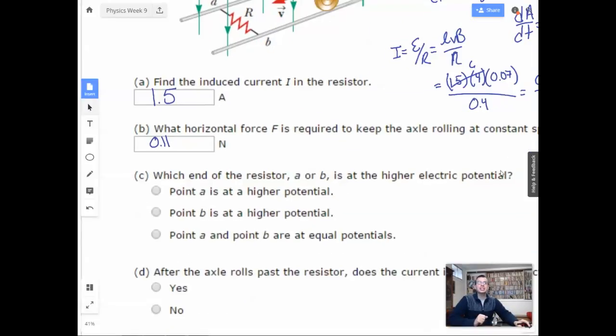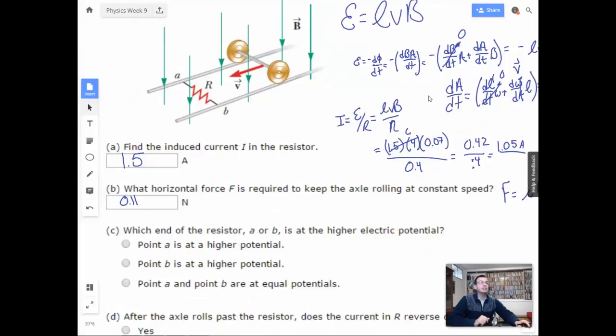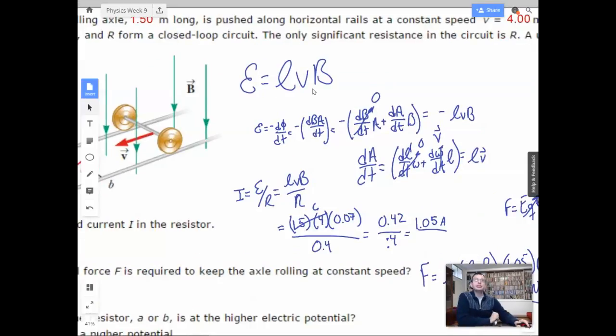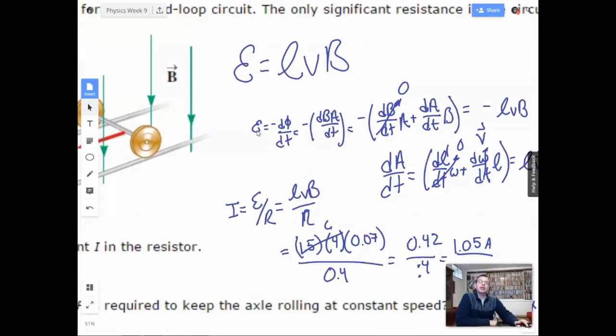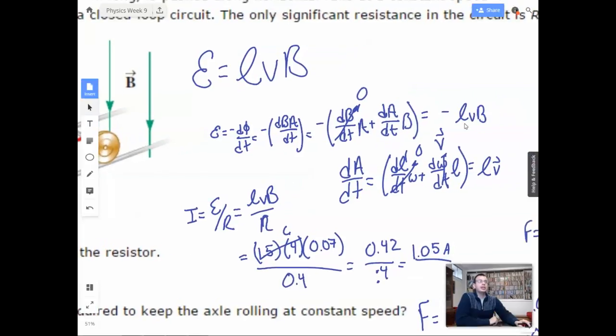Which end of the resistor, A or B, is the higher electric potential? Alright. So this is basically saying which way is the current going? So the way I'm going to do this is I'm going to look at this guy. So we did ε = negative dΦ/dt, negative magnetic field, blah, blah, blah. And we get negative LVB.